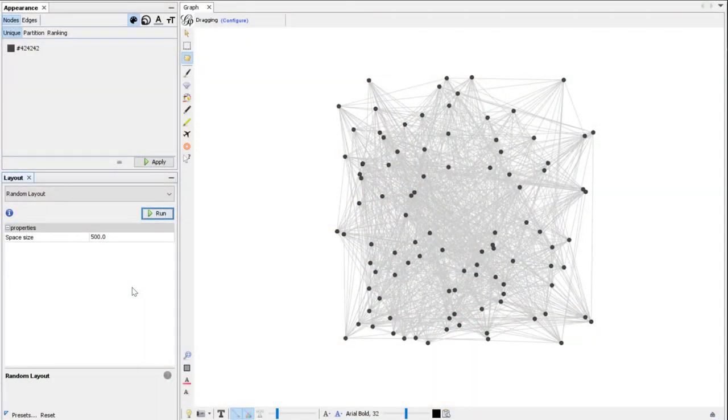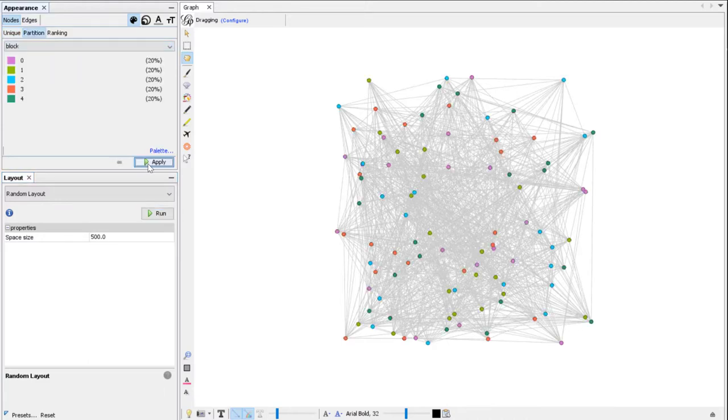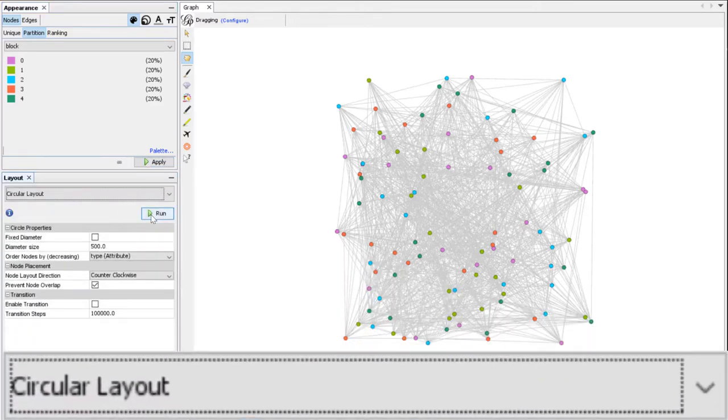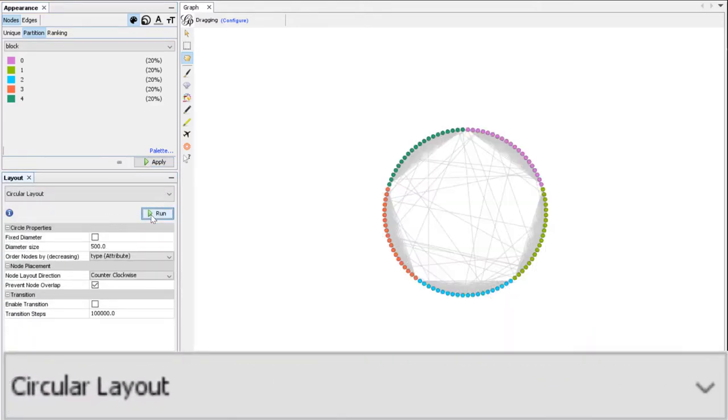Let me put colors to this network. Each of the five groups of nodes has a different color now. The circular layout puts the nodes in a circle and gathers them according to a given attribute. Here I used the block, so you see the nodes gathered by color because the color comes from the block.